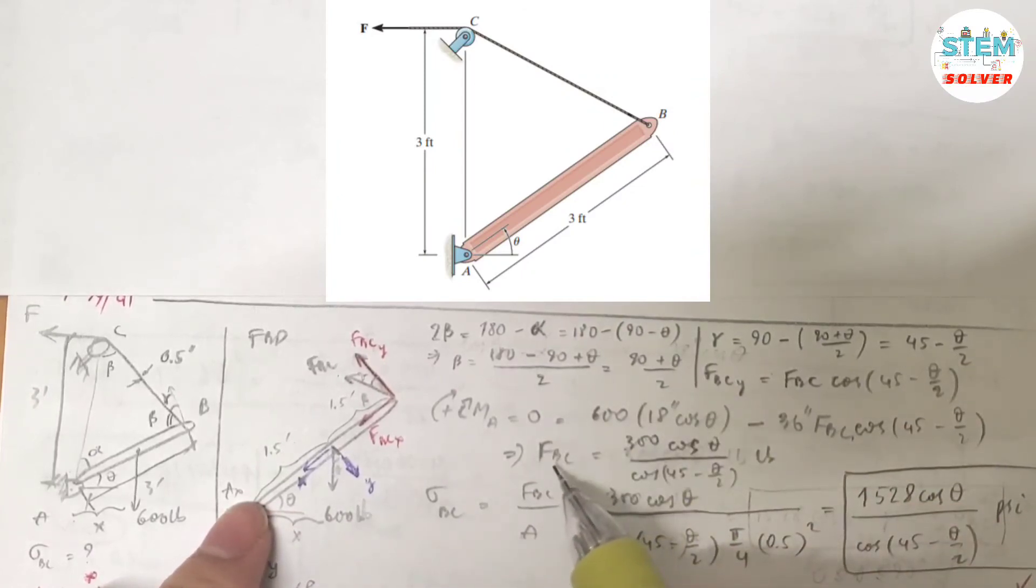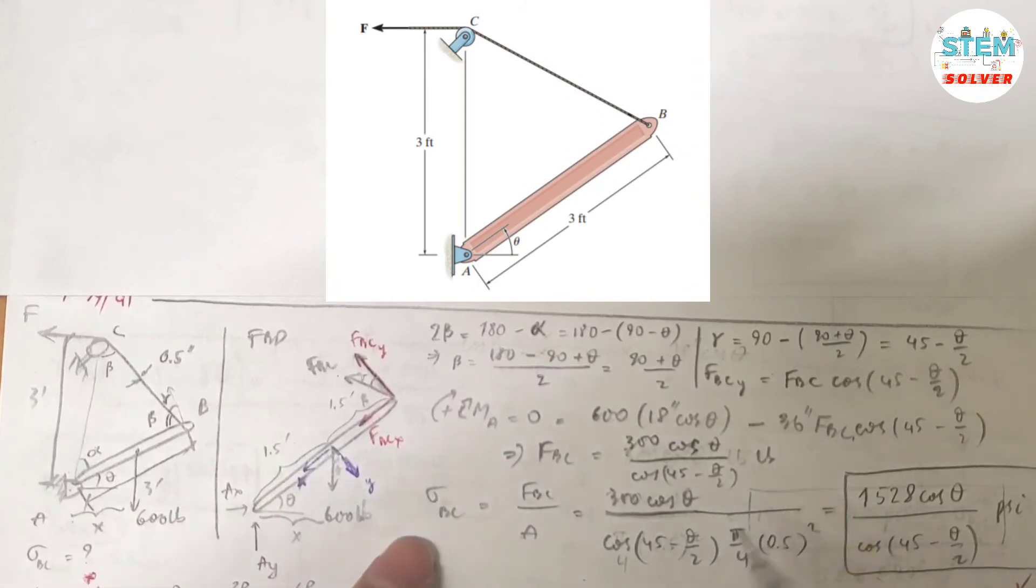Then solve for FBC, I got 300 times cosine theta divided by cosine of 45 minus theta over 2. And the unit is pounds. We're almost done.